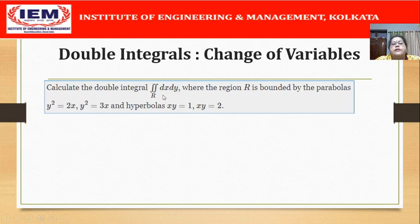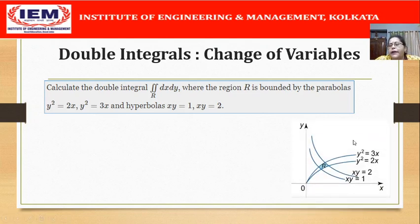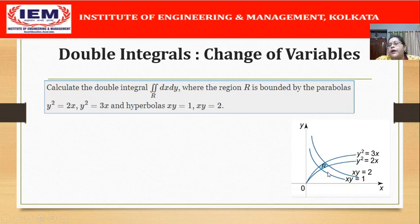Calculate the double integral ∬dx dy over the region R, where R is bounded by the parabolas y²=2x and y²=3x, and the hyperbolas xy=1 and xy=2. As usual let us draw the figure first. We have the parabolas y²=2x and y²=3x, and the hyperbolas xy=1 and xy=2. If we try to evaluate this integral in the Cartesian coordinate system it will be a problem because all four boundaries are curved, and therefore we will not be able to identify this as a type 1 or type 2 region, so we would be unable to evaluate this integral in the xy coordinate system.